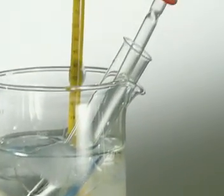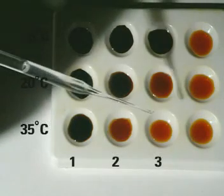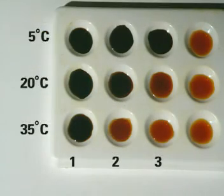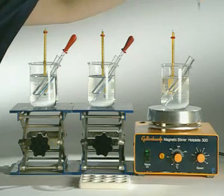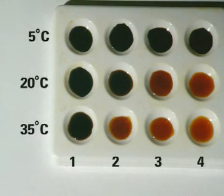As time goes by, the starch in the other test tubes is gradually broken down. After three minutes, starch only remains in the coldest solution. It may be several minutes before a change is observed at 5 degrees C.